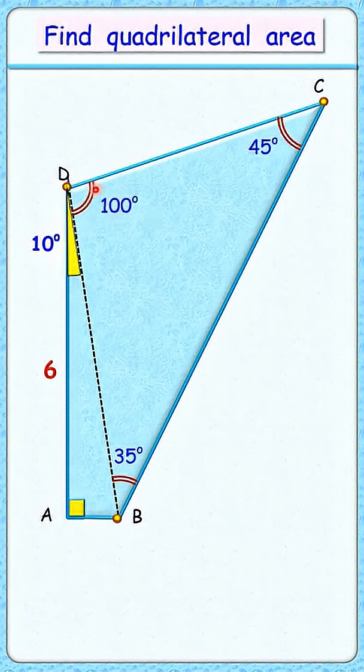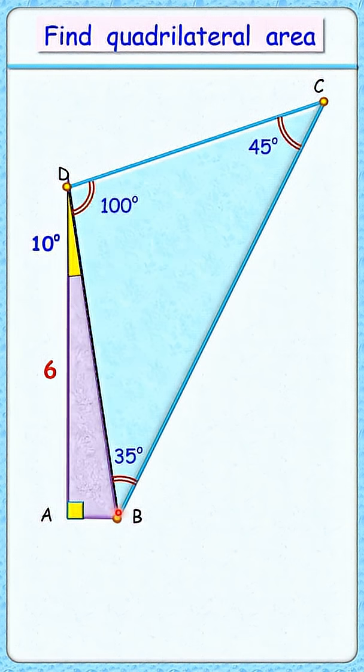Now let's divide this quadrilateral into two triangles along line DB. These two triangles have a combined area equal to the quadrilateral's area.